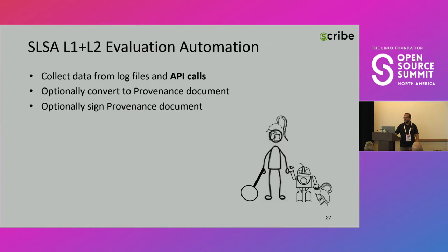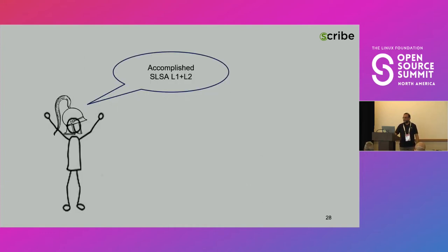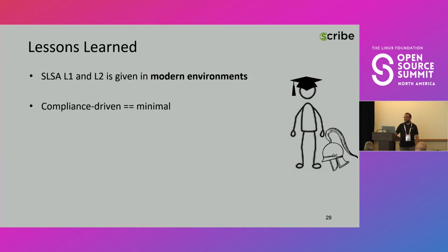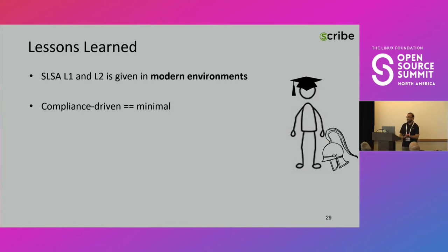So evaluation automation is really easy: collect data from log files and API calls, as we said before. I was really happy and updated my CISO that we had accomplished SALSA level one and level two. What we have learned from this is that in modern environments, once you use a version control and a build system, you are in fact SALSA level two.